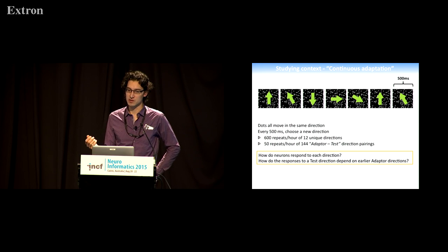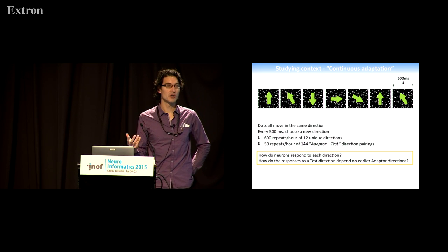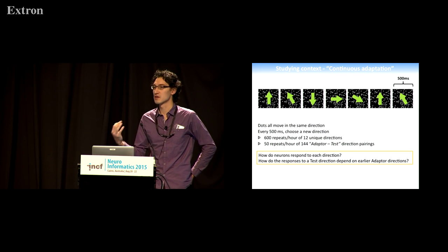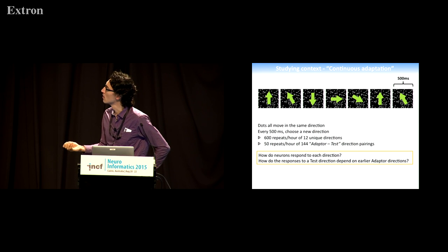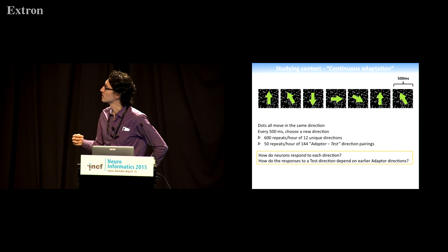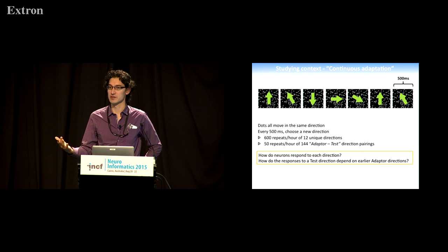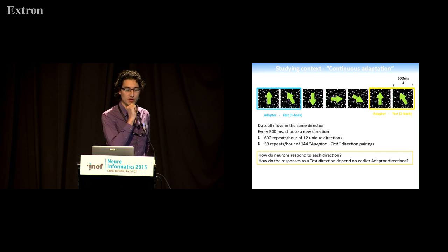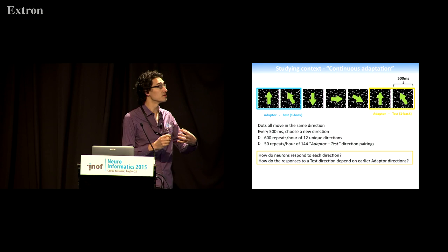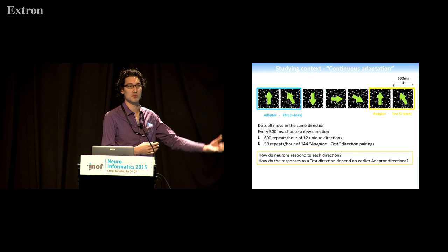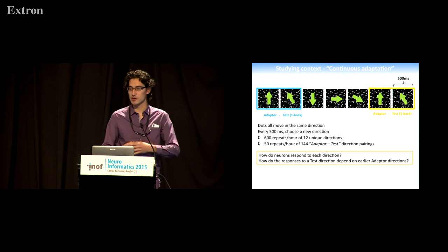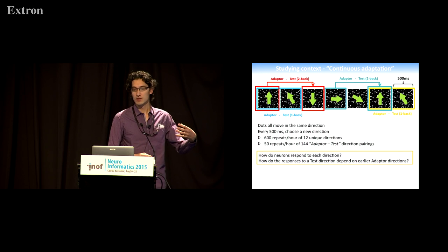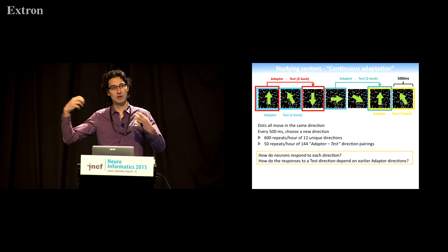We record these responses to moving stimuli. We have this continuous adaptation stimulus in which dots are presented on a computer monitor in front of the animal. They move in the same direction for 500 milliseconds; every 500 milliseconds we choose a new direction, one of 12. We get in an hour 600 repeats of 12 unique directions, so we have a lot of statistical power. What we're particularly interested in looking at is the effect of context—how does motion upwards affect the response to subsequent motion up onto the left? We can do this looking at a one-back paradigm or a two-back paradigm, examining how the separation of the adapter and the test period affects tuning.